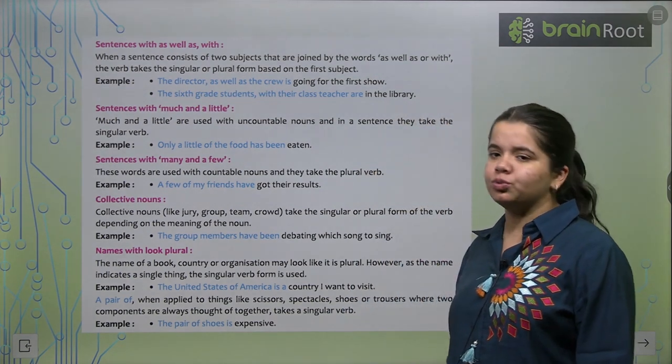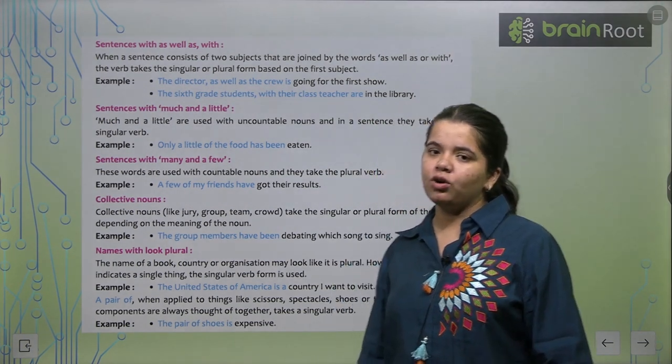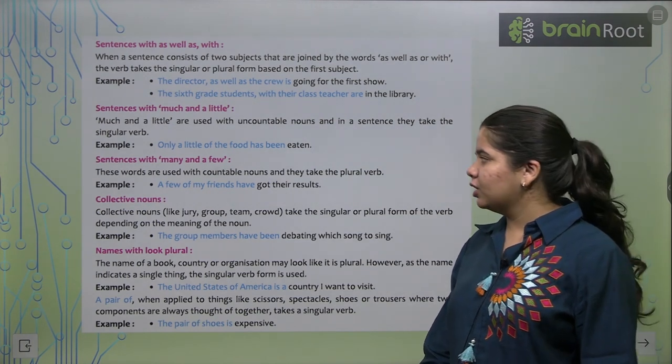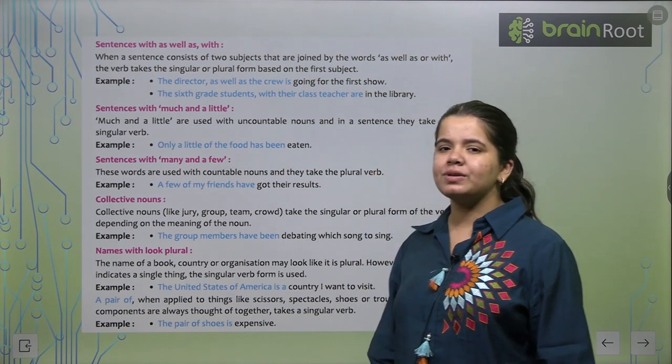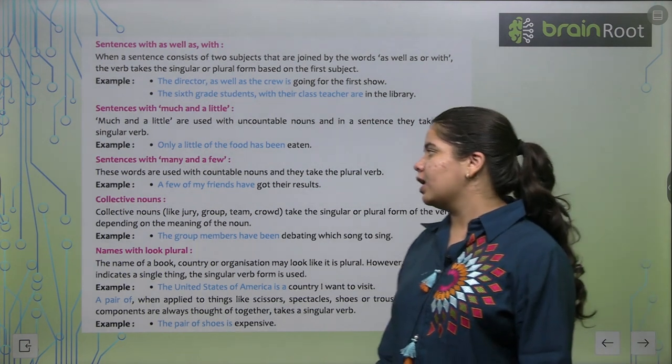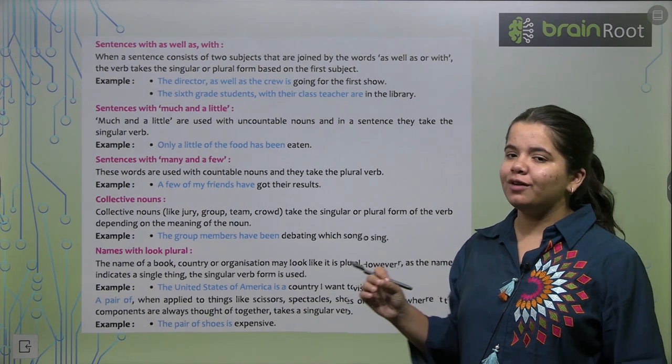Sentences with many and a few. Jo many or few ke saath hota hai. These words are used with countable nouns. Toh, many or a few humare countable nouns mein aate hai. Aur, iske saath hum kya karte hai? Plural verb use karte hai. A few of my friends have got their results.